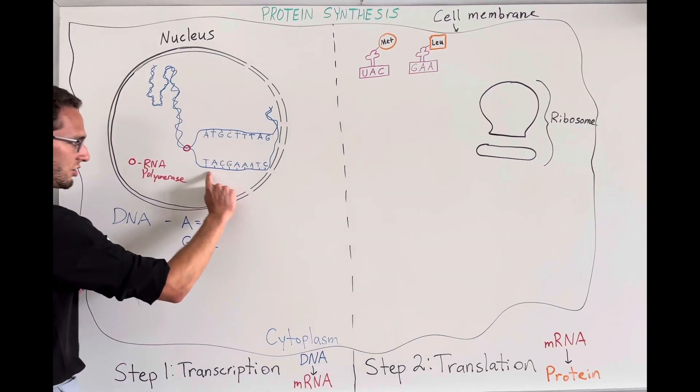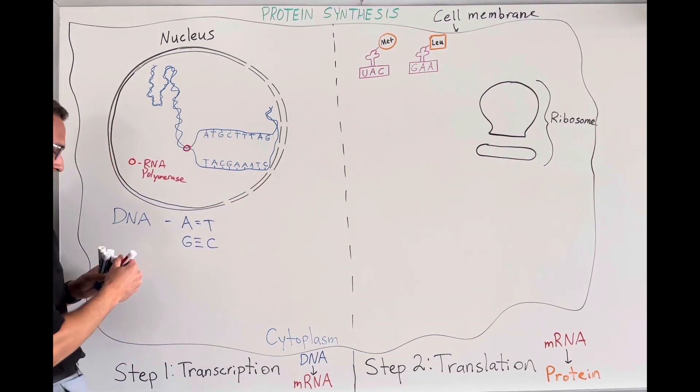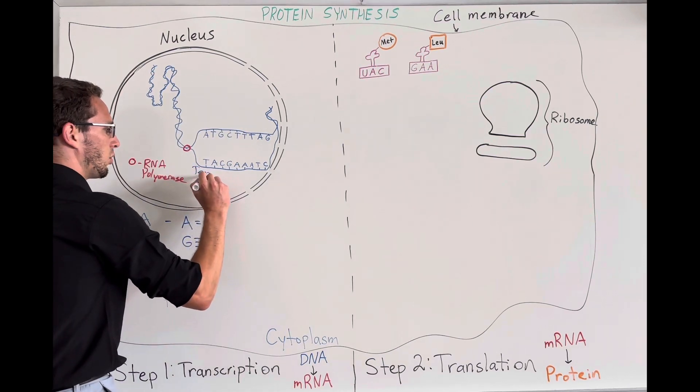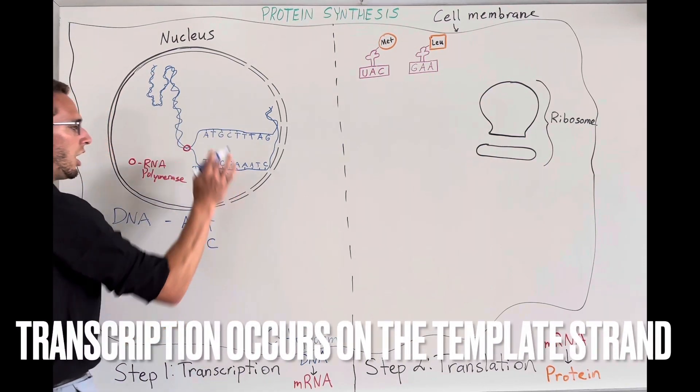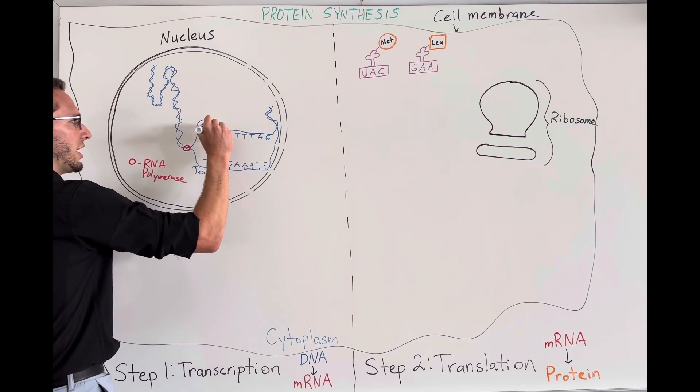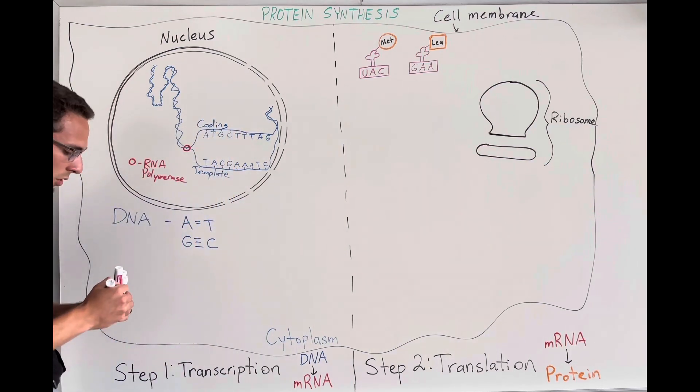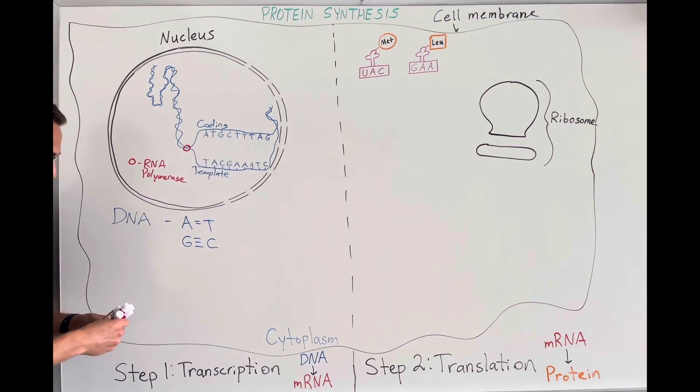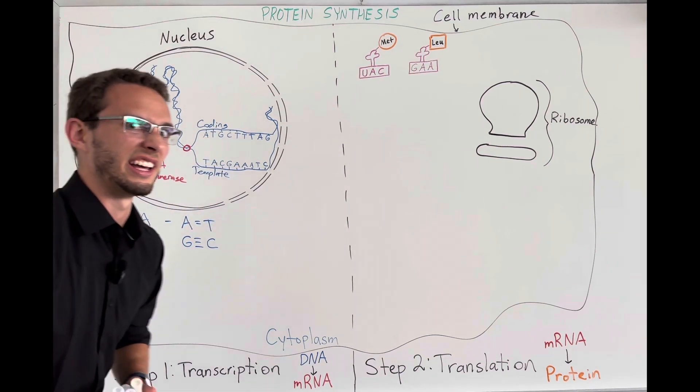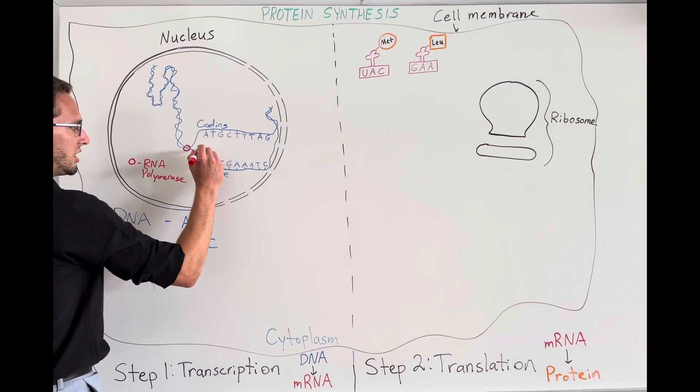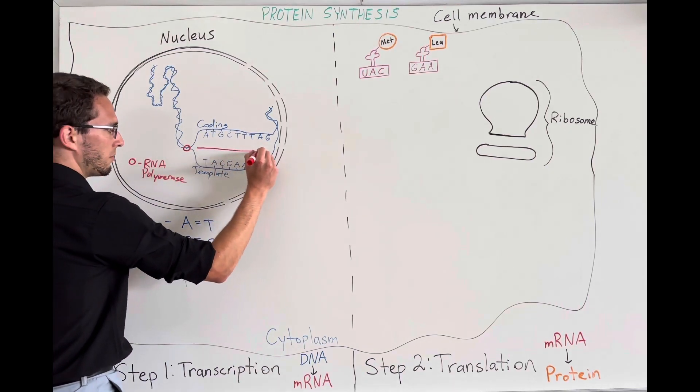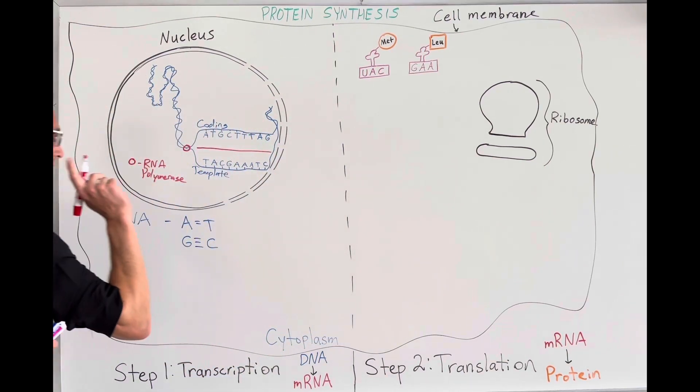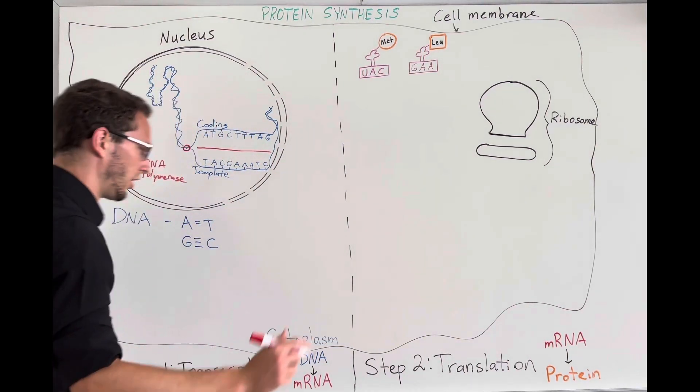So this strand of the DNA right here is actually going to be called the template strand. This is the one we're actually going to read from. On the top one, it's called the coding strand, and we're not really going to focus on that one. We're going to focus on the template strand. So when we open up the DNA, we're going to start making some RNA, single-stranded. So we're going to have a single strand of RNA, and we're going to match it to this DNA in a complement.